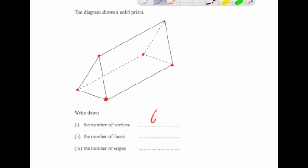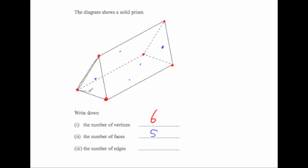Let's count the faces. For the faces there's a triangle at the front and a triangle at the back, and there are one, two, three rectangles — so altogether that would be five faces. Now let's count the number of edges. We have three edges at the front, three edges leading along the length of the prism, and three at the back — so altogether that would be nine edges. So there are six vertices, five faces, and nine edges.